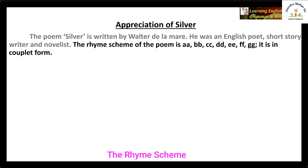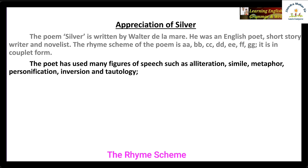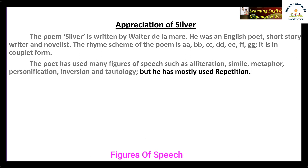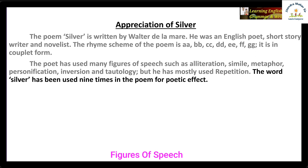The poet has used many figures of speech such as alliteration, simile, metaphor, personification, inversion and tautology, but he has mostly used repetition in this poem. We can see the word 'silver' has been used nine times in the poem for poetic effect. So here we have completed four points.